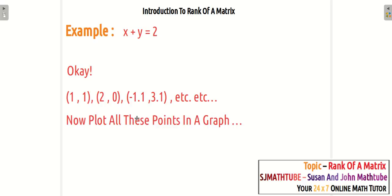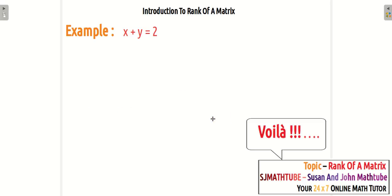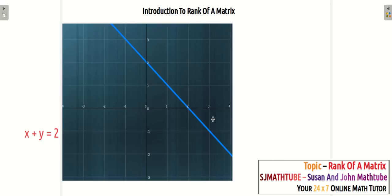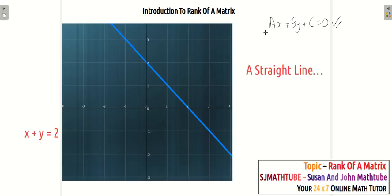Now, imagine we are going to plot all these points in a graph. What exactly do you expect? Voila! Of course, it will be a straight line — and that is exactly what we expected. So what I am trying to convince you here is, if you have an equation in the form AX plus BY plus C equal to 0, then you are going to get a straight line.